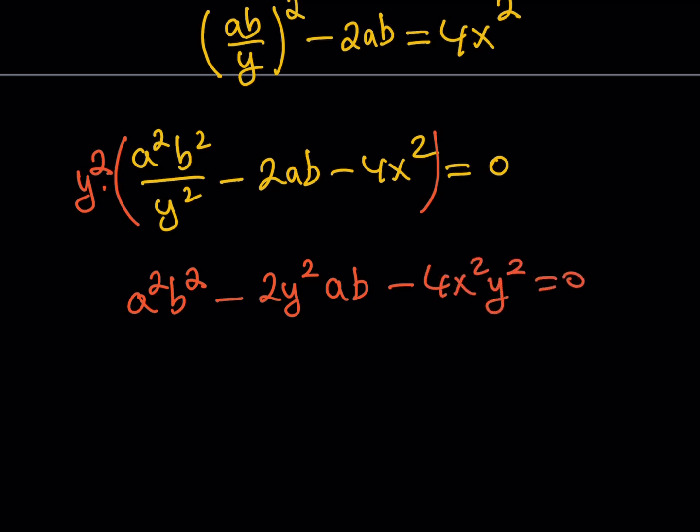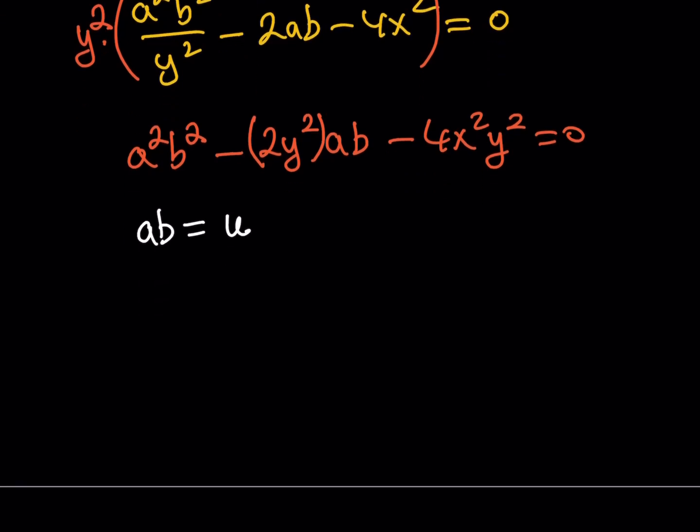If you put that in parentheses, you're going to see that the coefficient of AB is negative 2y². Since I'm trying to solve for AB here, that's my goal. What I'd like to do is I'd like to use substitution because substitution is cool and I love it. So let's go ahead and call AB U, because U is always awesome. This is going to turn into U² - 2y²U - 4x²y². Since I'm trying to solve for U here, x and y are considered constants.